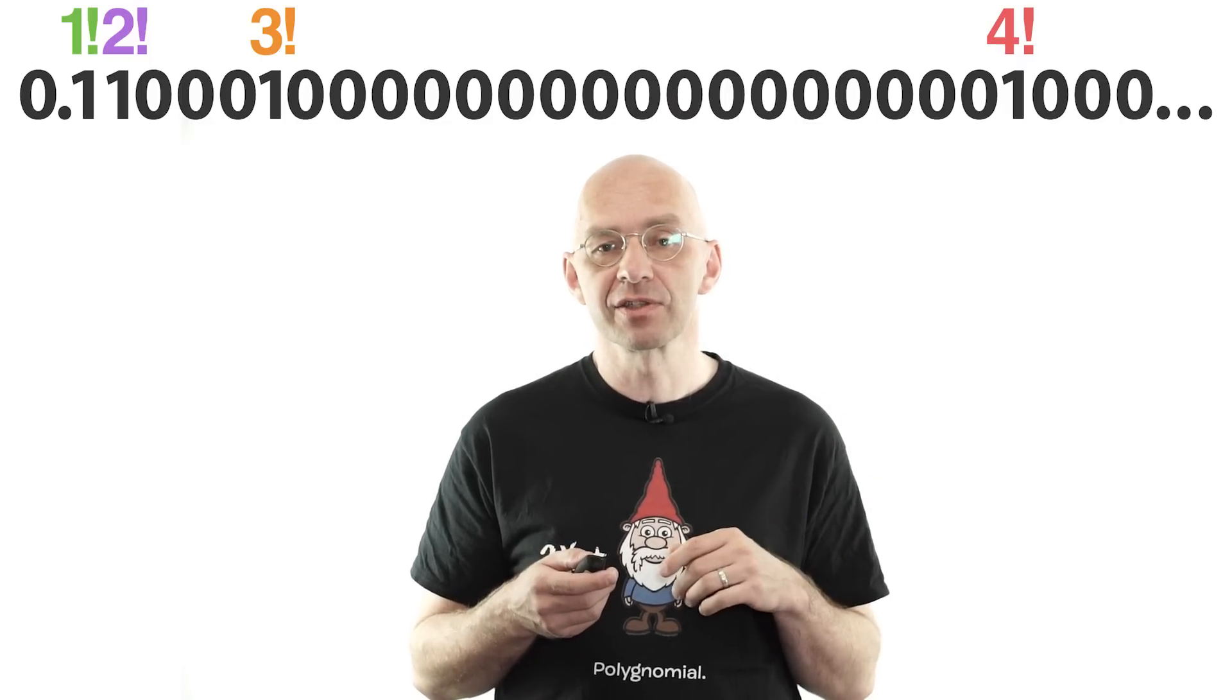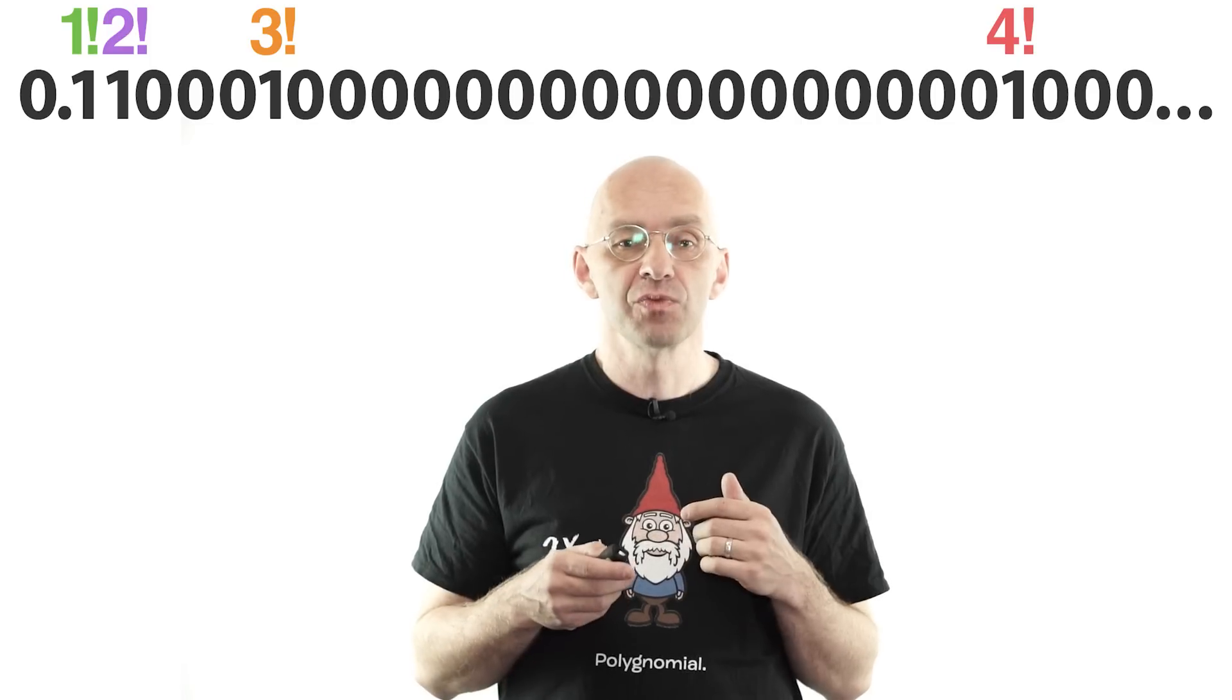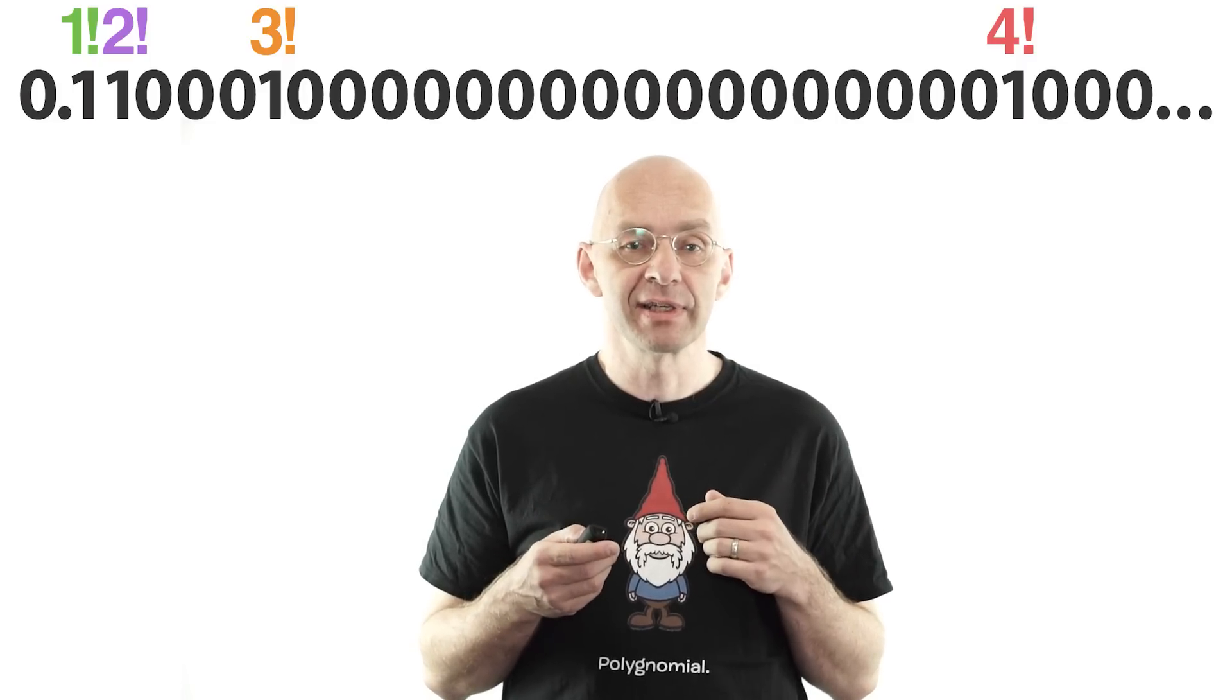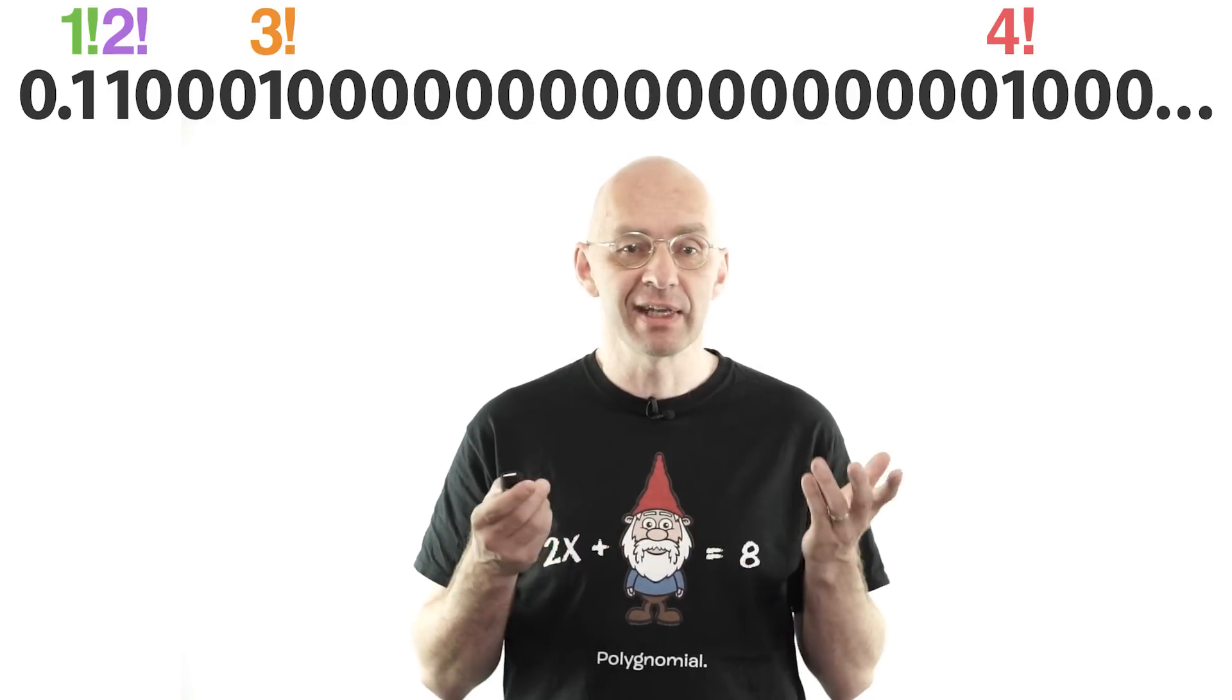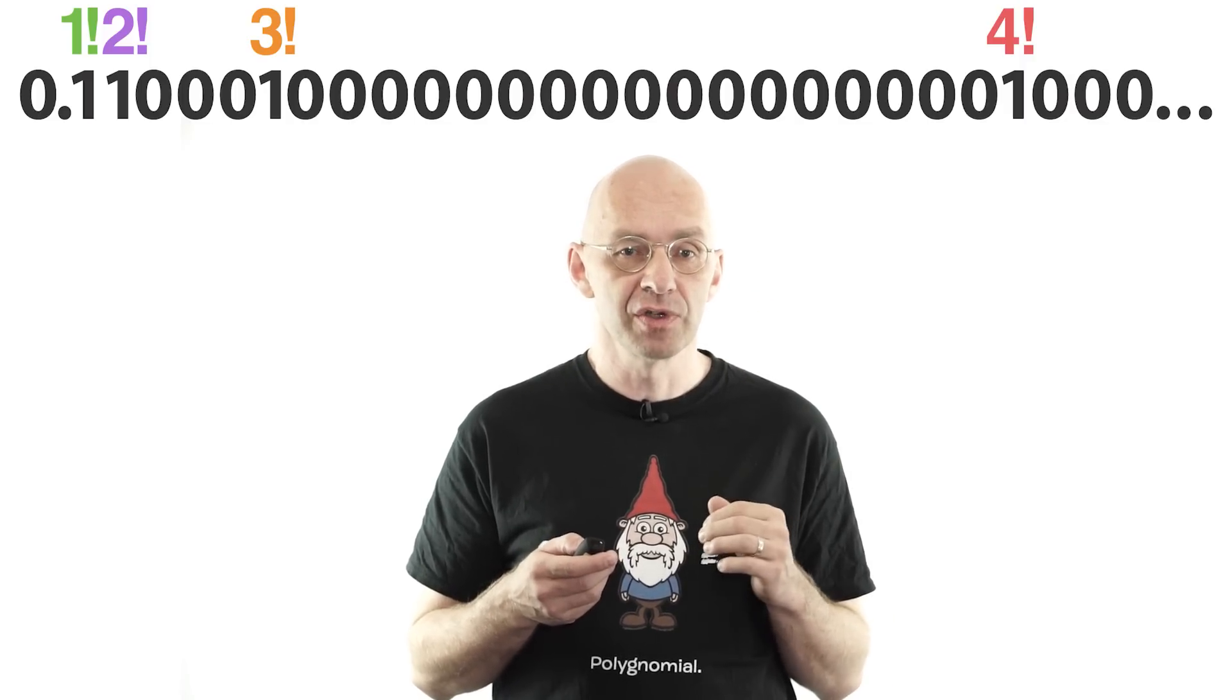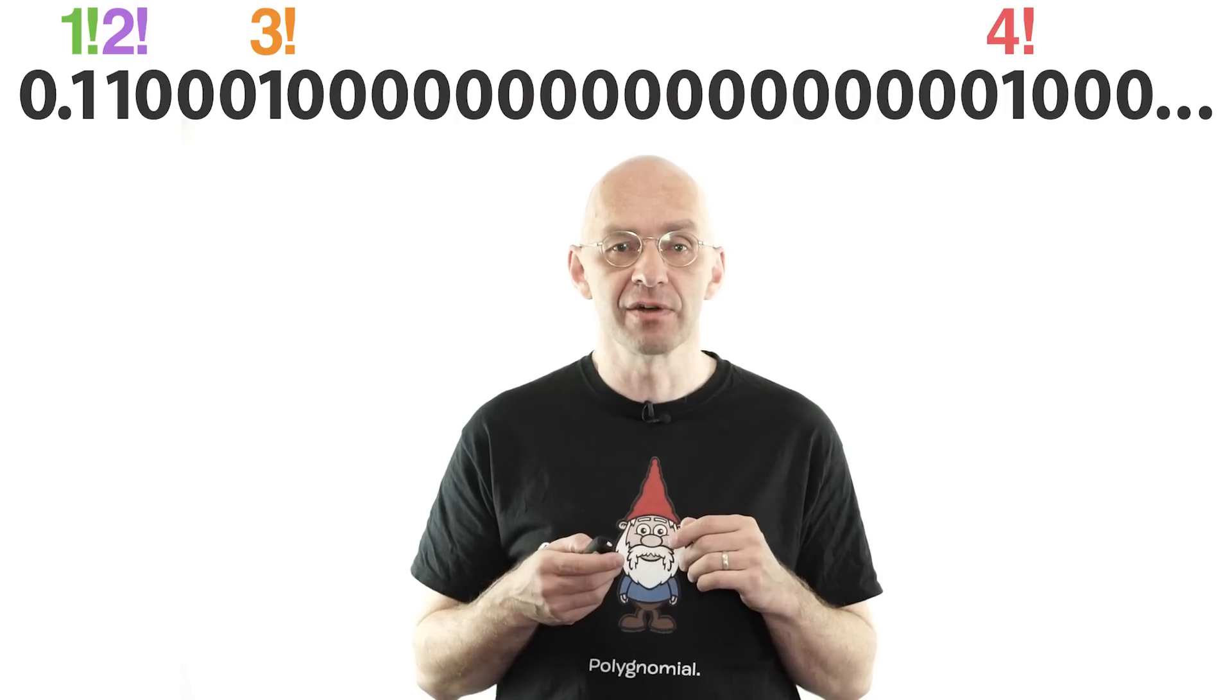Since this number features strings of zeros of arbitrary lengths, it clearly does not have a repeating tail and is therefore an irrational number. It is one of the earliest numbers that was proven to be transcendental, and in textbooks it is usually portrayed as the transcendental number whose transcendence is easiest to prove. Having said that, I think the way to pinpoint a specific transcendental number and prove its transcendence that I showed you in this video is definitely much easier to explain and understand than any of the proofs of the transcendence of Liouville's constant that I have seen.